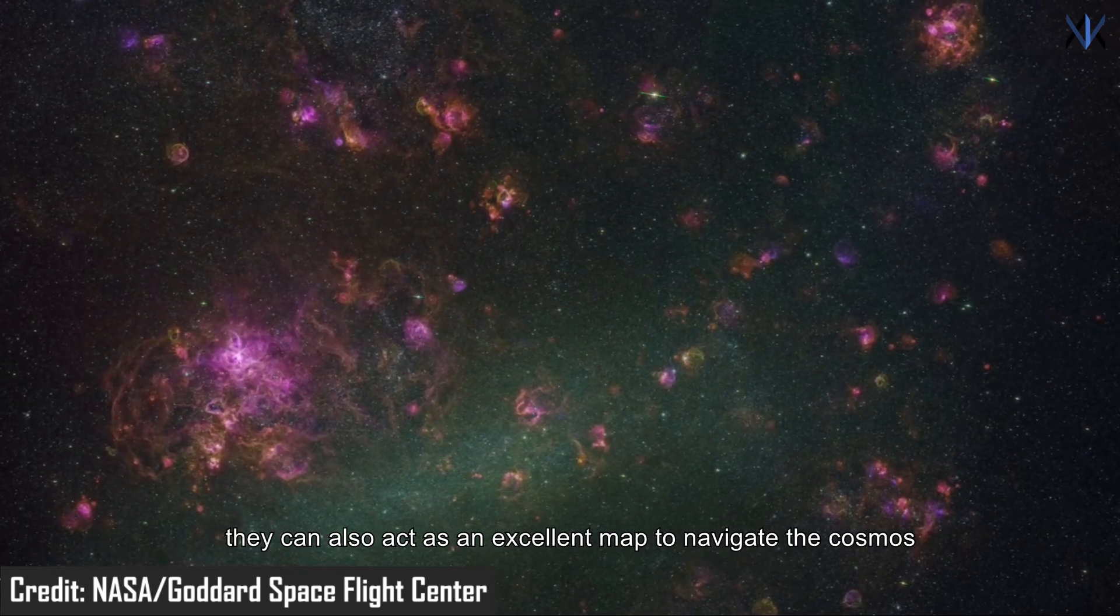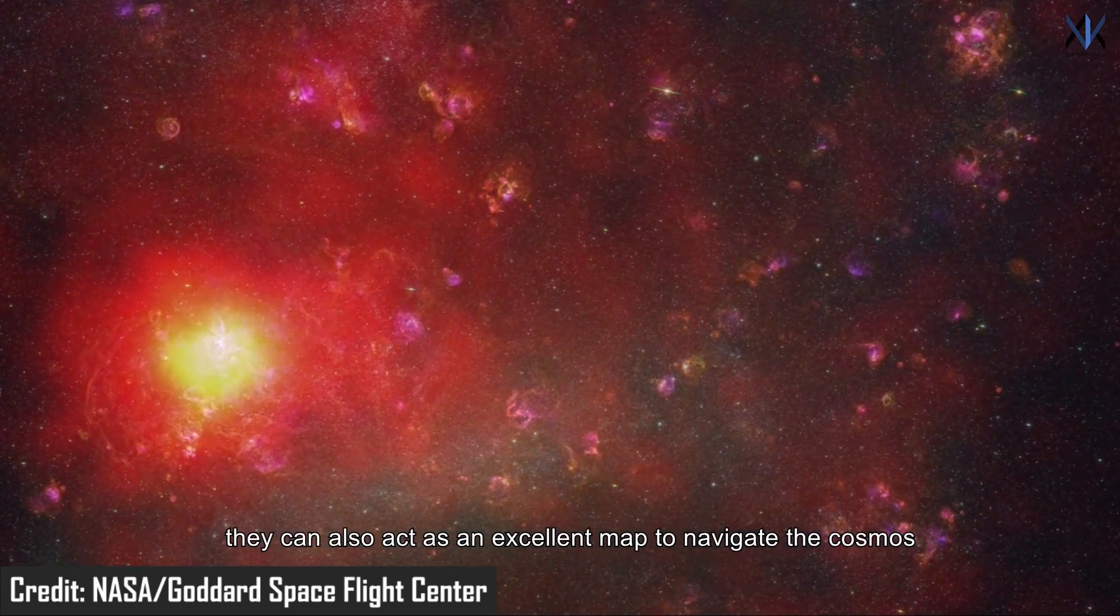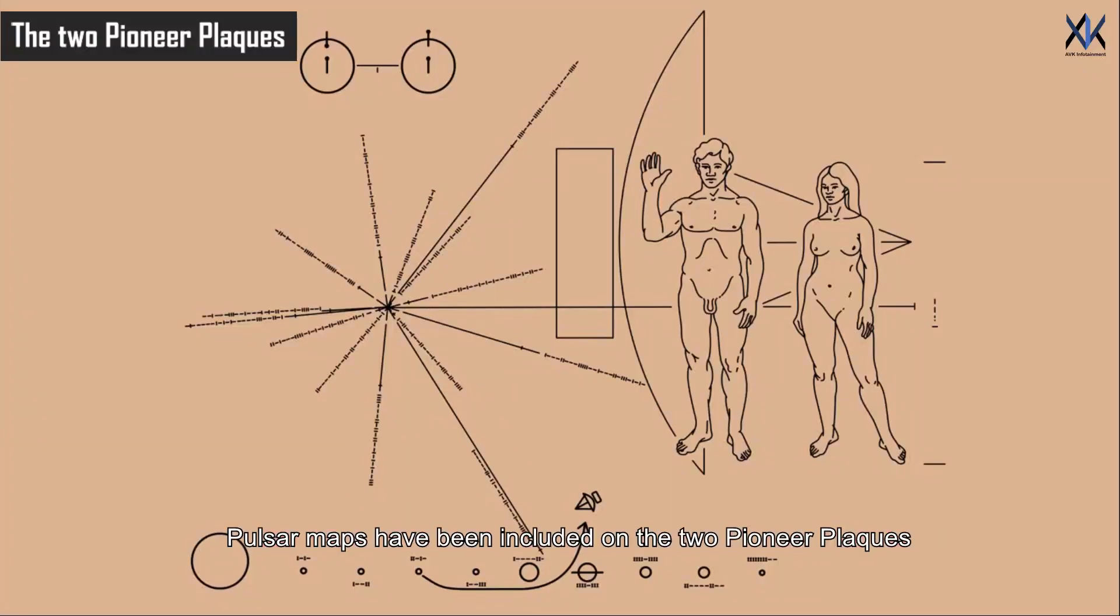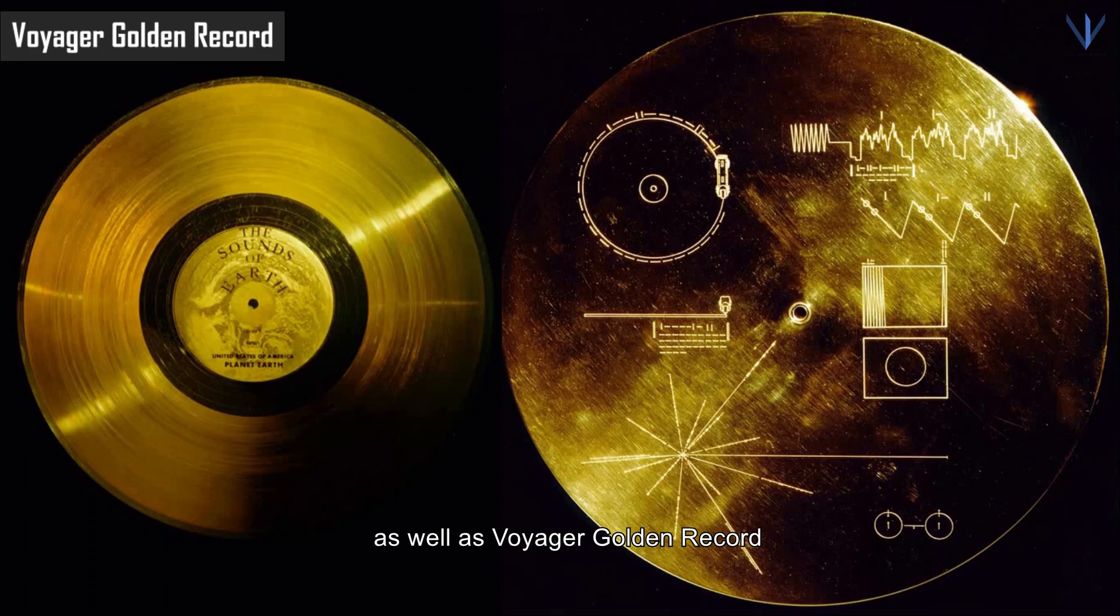They can also act as an excellent map to navigate the cosmos. Pulsar maps have been included on the two Pioneer plaques as well as Voyager's Golden Record.